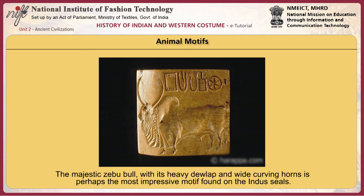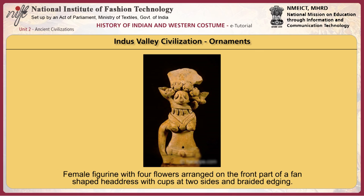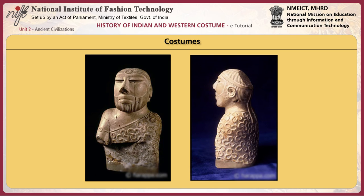Generally carved on large seals with relatively short inscriptions, the zebu motif is found almost exclusively at the largest cities of Mohenjodaro and Harappa. This female figurine with four flowers arranged at the front part of a fan-shaped headdress, with cups at two sides and braided edging, is heavily adorned with a triple-strand choker with pendant beads, a double-strand necklace with central disc pendant, and a triple-strand belt with disc-shaped ornaments. The majority of male figurines found are nude and adorned with rows of elaborate necklaces and bracelets, while others depict men dressed in knee-length skirts. One finely carved figurine of a bearded priest is shown wearing a lavishly decorated wrap robe over the left shoulder and tucked under the right arm, like the priest kaunakes of Mesopotamia.